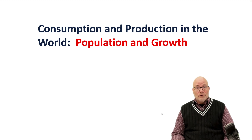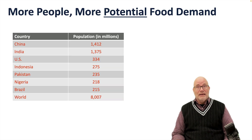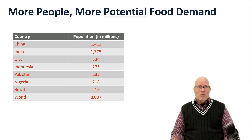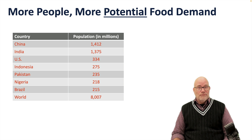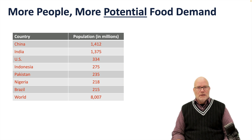Population and growth are a major determinant of food demand. More people equals more potential food demand. Income and income growth plays a key role in food demand, but population does as well. If we look at some of the most populated countries in the world...